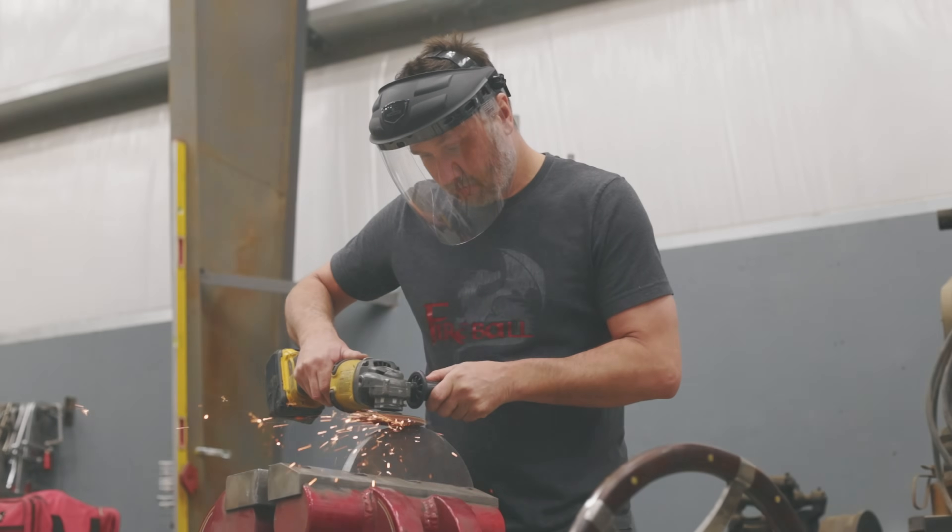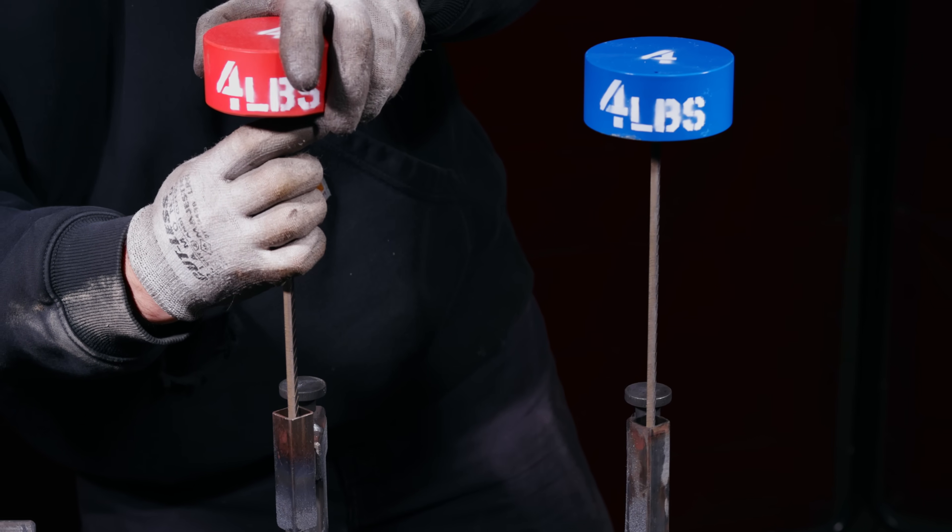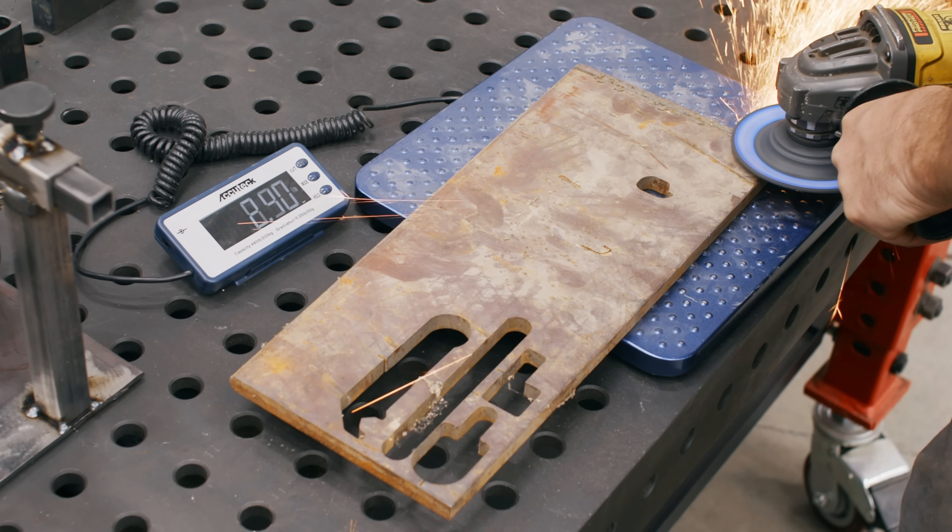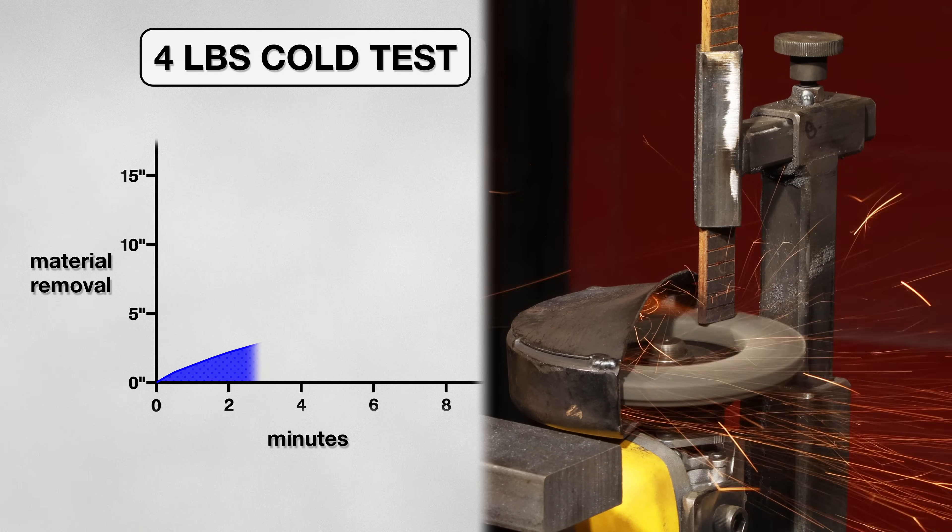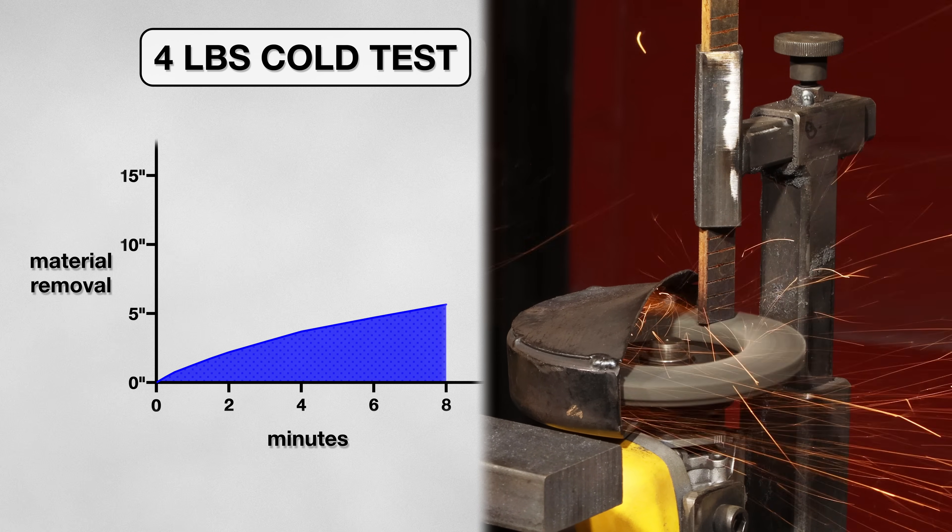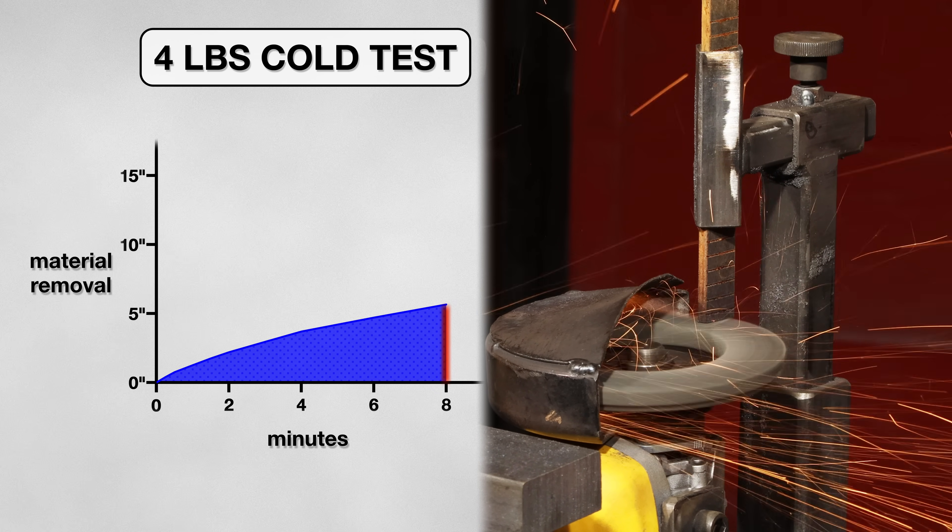First, I wanted to get a baseline for how this disk performs. So I started by simulating light pressure grinding. I did this by adding a four pound weight to my rig. This is roughly the weight of the grinder. So how did it do? Well, at the eight and a half minute mark, I noticed the disk was not cutting the coupon anymore. So I ended the test. Taking a closer look, I measured about six inches of material removed.